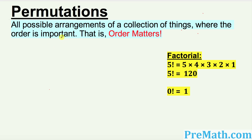Hello again, everyone. In this video tutorial, our topic is permutations. So what are permutations? Permutations are nothing more than just the arrangements of different objects in which the order is very important. When we say order is really important, it means which object is coming first and which is coming second and so on. So that means order really matters.